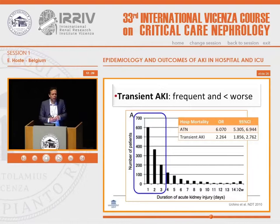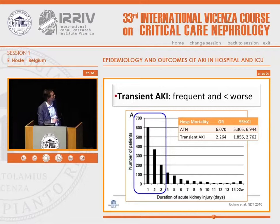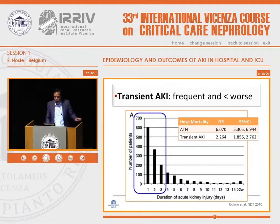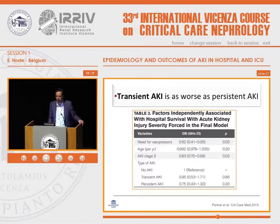Regarding duration of AKI: it makes sense that shorter duration has less impact on outcome, and the majority of our patients have short durations. Data from Chino shows most patients with AKI have periods ranging from one to three days, and these transient AKI patients have increased risk for mortality, though much less compared to more persistent AKI. However, when correcting for severity of AKI, as a French group did, there's no difference for duration anymore — suggesting it's the severity, not the duration, that makes the most difference.